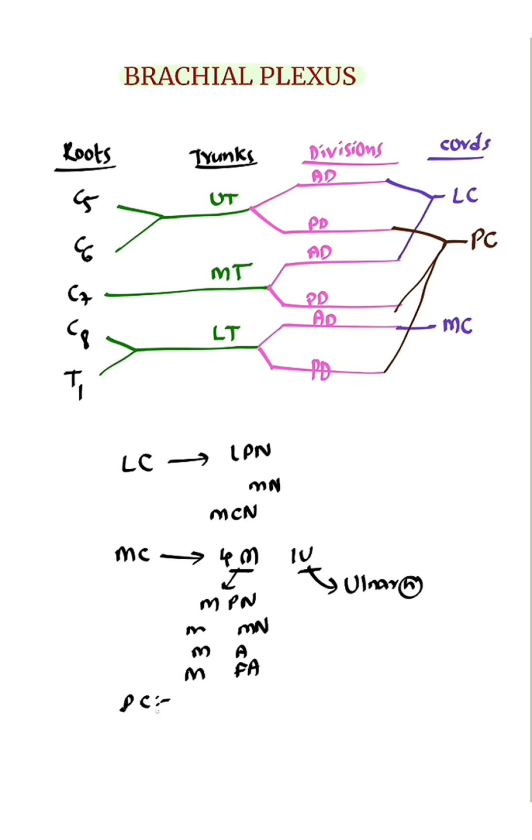Branches of posterior cord: Remember the mnemonic ULNAR - Upper subscapular nerve, Lower subscapular nerve, Nerve to latissimus dorsi, Axillary nerve, and Radial nerve.